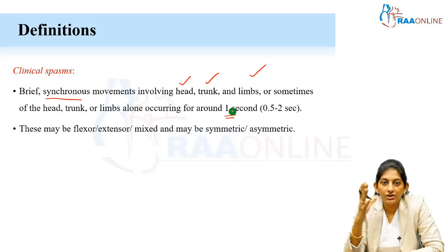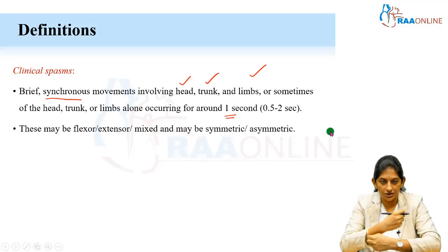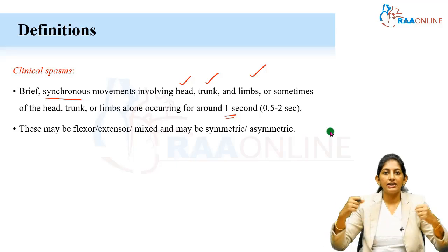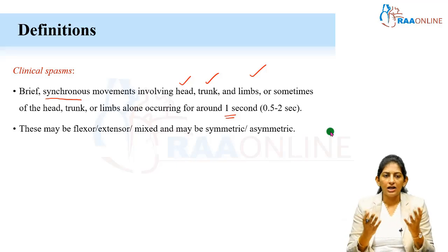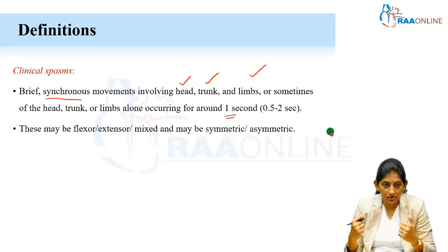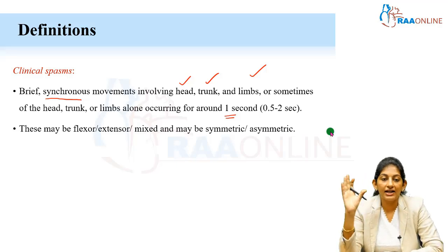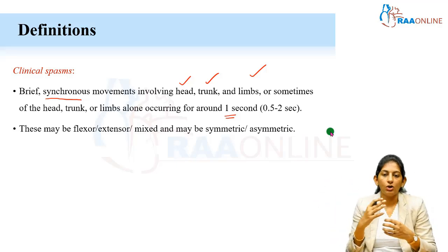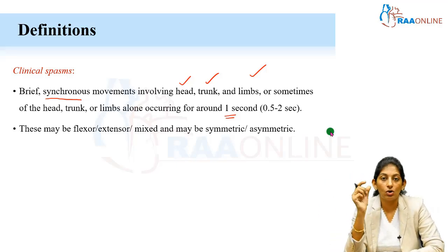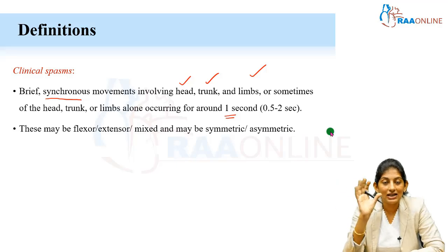Based on the characteristic of the spasm, it is divided into flexor, extensor, or mixed. Flexor means the whole trunk and limbs come into flexion; extensor is extension. Flexor spasms are more common — around 70 to 80 percent are flexor spasms. They appear like a quick Moro reflex or startle reflex. Extensor and mixed spasms are also possible. Spasms can be symmetric — both limbs uniformly involved — or asymmetric, where one limb is involved alone. Asymmetric spasms depend on the location of the etiology; a focal cerebral lesion can cause asymmetric spasms.